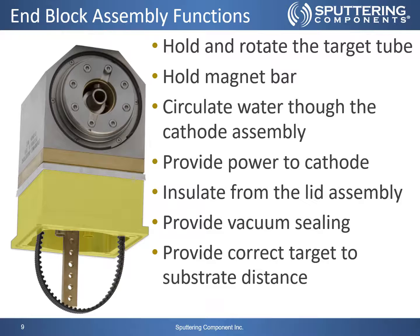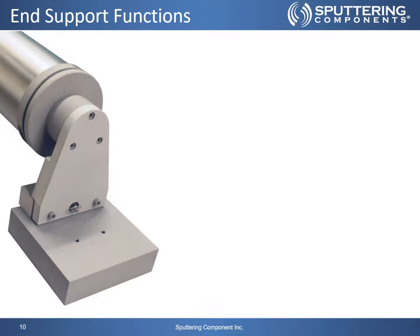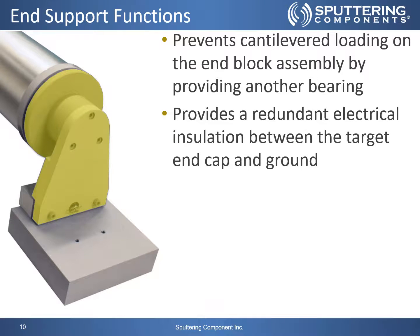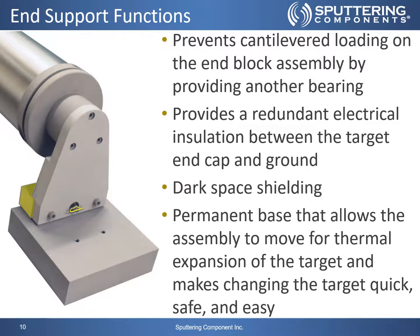This is critical because the distance between the lid assembly and the substrate surface is usually a fixed distance. On the other end of the target tube, the end support assembly provides another set of functions. It prevents cantilevered loading on the end block assembly by providing another bearing surface at the free end of the target. It provides redundant electrical insulation between the target end cap and ground, preventing short circuit conditions even if coating builds up between the target clamps and the end support dark space shield. It provides dark space shielding by maintaining a small gap between the target clamp and the electrically floating end support assembly, which prevents plasma from forming between the two surfaces and keeps them from sputtering. The end block assembly also has dark space shielding around it. Lastly, the end support has a permanent base that allows the assembly to move for thermal expansion of the target and makes changing the target quick, safe, and easy.